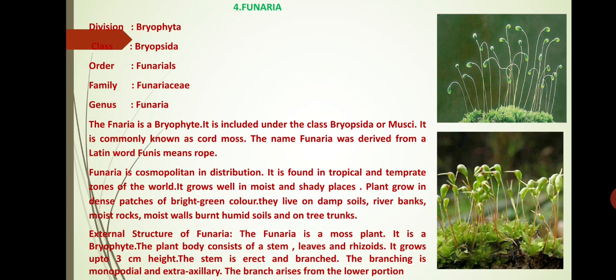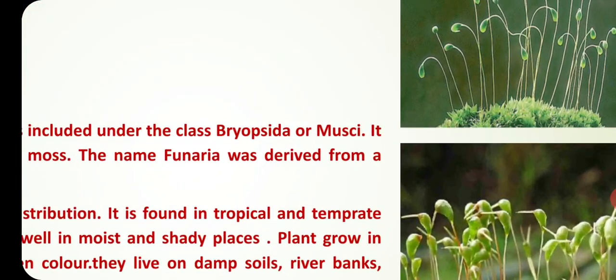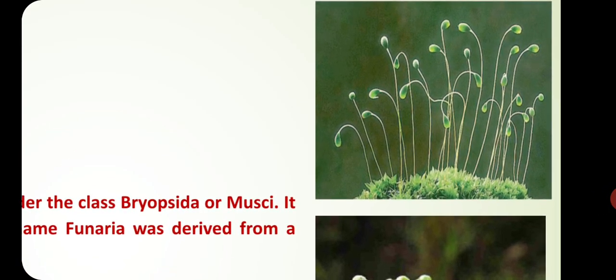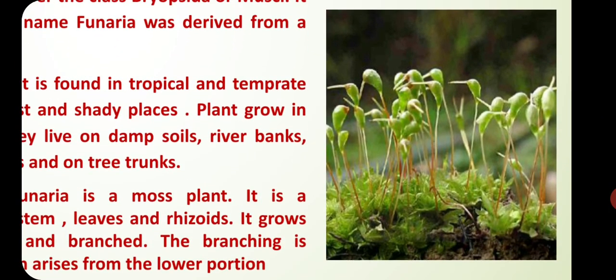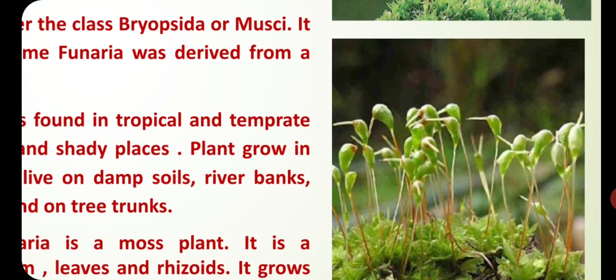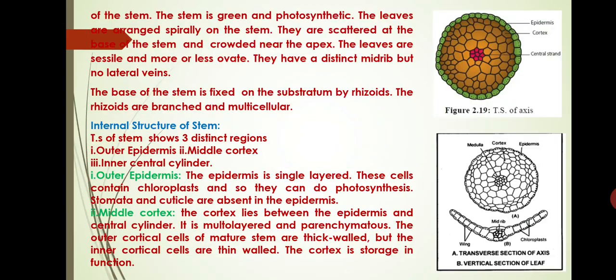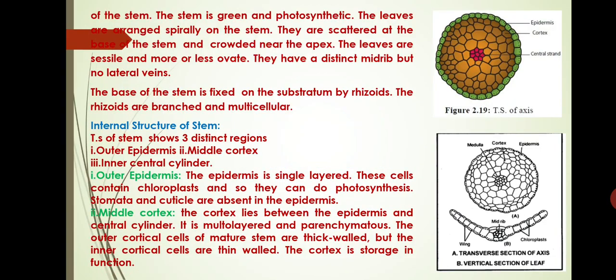The branch arises from the lower portion. The stem is green and photosynthetic. The leaves are arranged spirally on the stem. They are scattered at the base of the stem and crowded near the apex. The leaves are sessile and more or less ovate. They have a distinct midrib but no lateral veins.